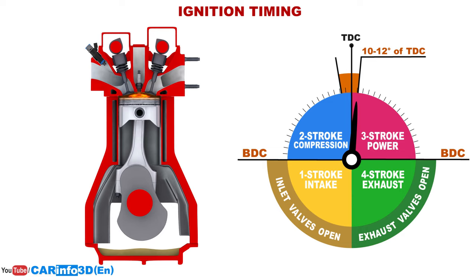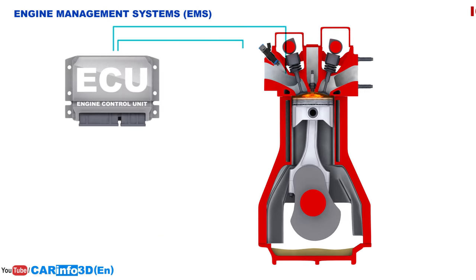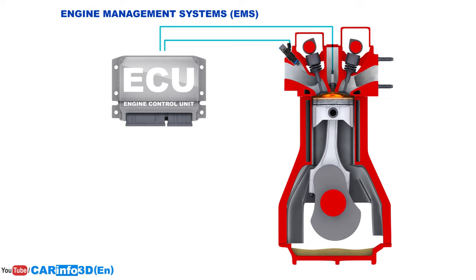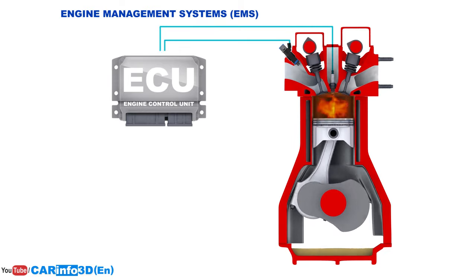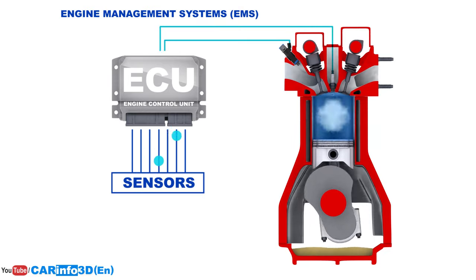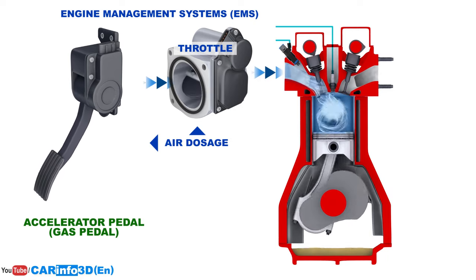The moment at which the spark plug fires is called the ignition advance angle. The optimal ignition advance angle is determined by crankshaft speed — the higher the crankshaft speed, the earlier the spark plug must fire. If the crankshaft speed is low, the ignition advance angle should be closer to top dead center. In modern engines, ignition timing, fuel injection, and many other tasks are controlled by an engine management system with the engine control unit at its heart, assisted by various sensors. The driver only needs to supply air, which is accomplished with the help of the accelerator pedal, also known as the gas pedal.